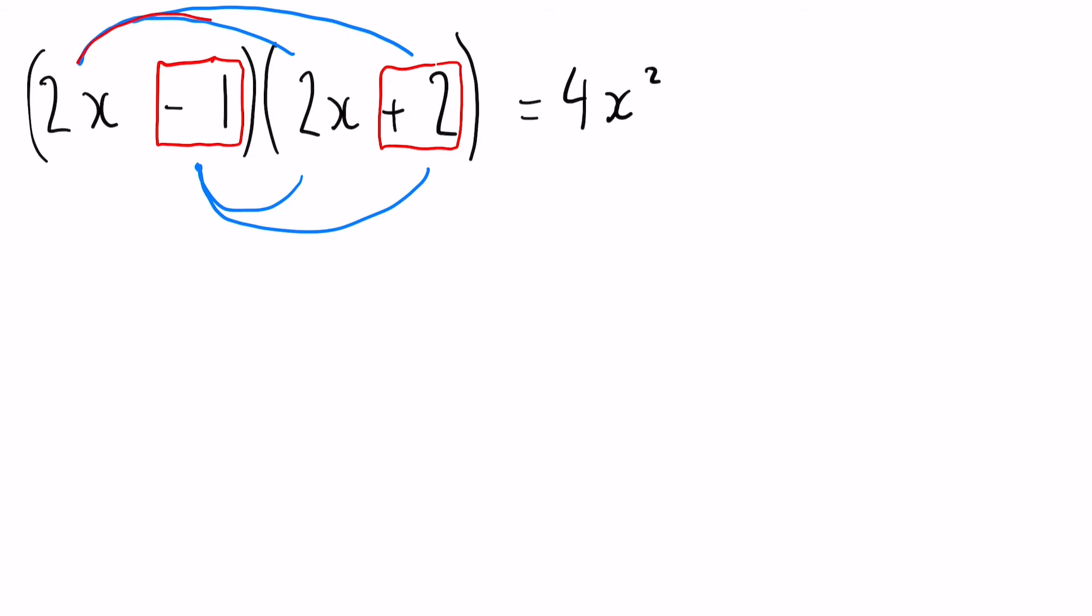Two X multiplied by a positive two: two times two gives us four, and then we just have the extra X in there. So top claw is done. Finally, onto the bottom claw. This time we have a negative one multiplied by a two X. Again, we've got a positive and a negative, so that is going to give us a negative. One multiplied by two X is simply two X.